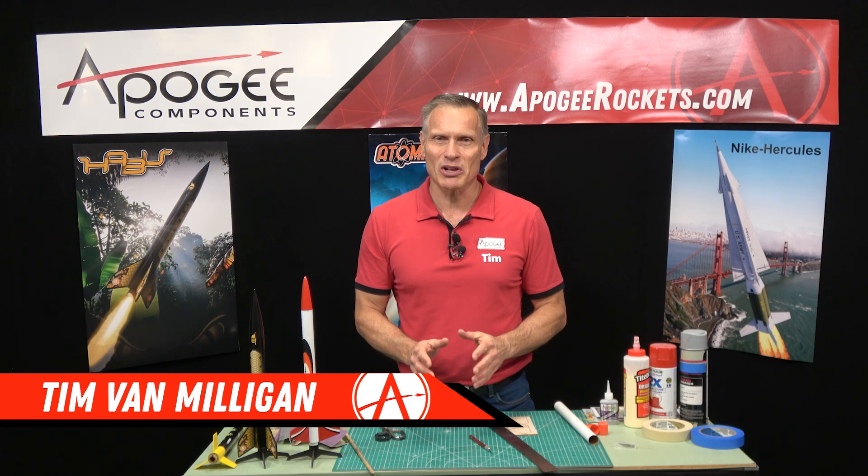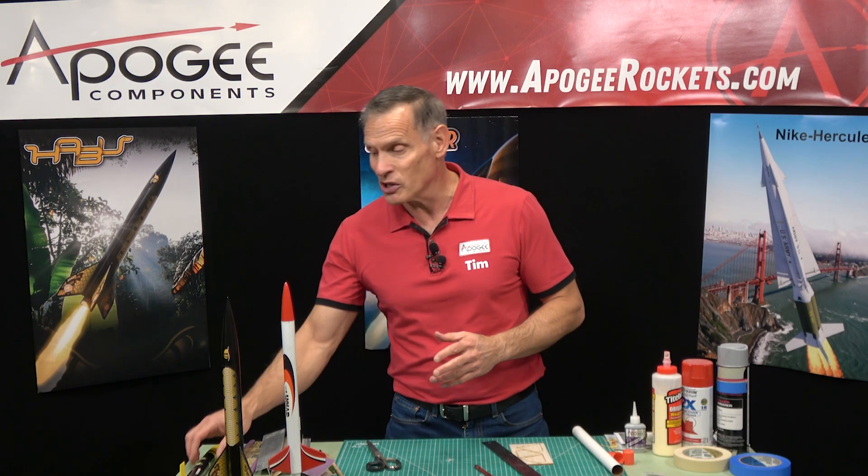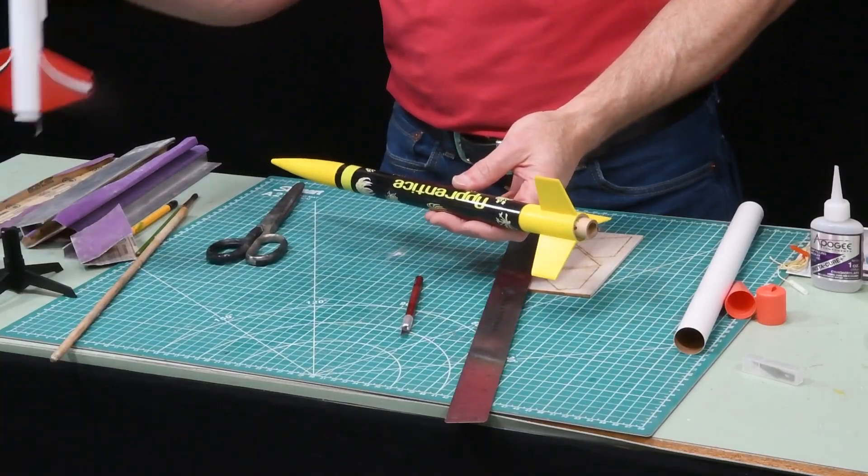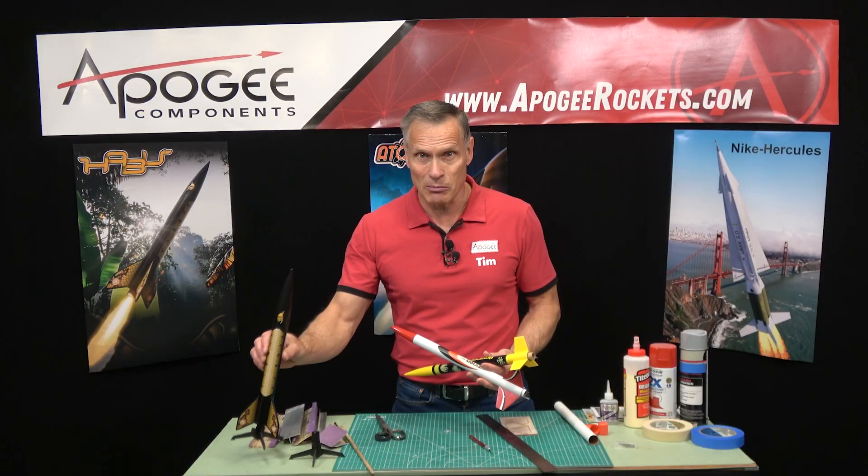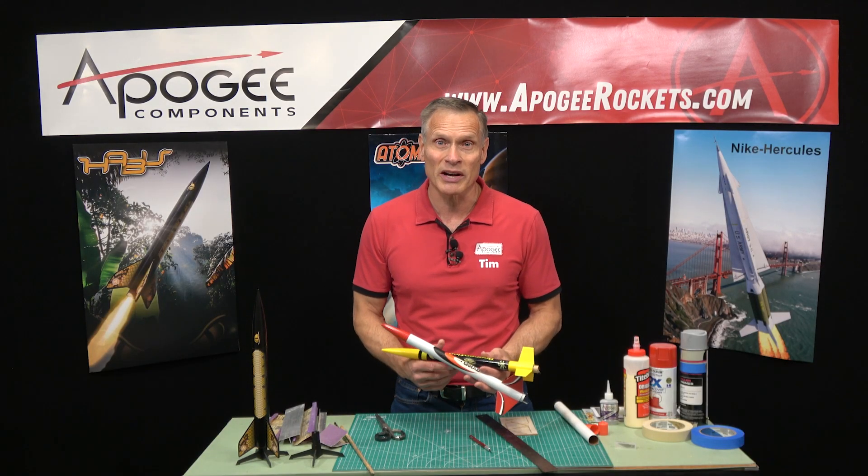Hi, I'm Tim Van Milliken from Apogee Components. Occasionally we get the question of what do I need when I'm building a skill level one rocket? Well a skill level one rocket is your basic rocket, your entry level rocket. We sell a number of them here at Apogee Components. We have the Apprentice and we have our favorite the Avion.